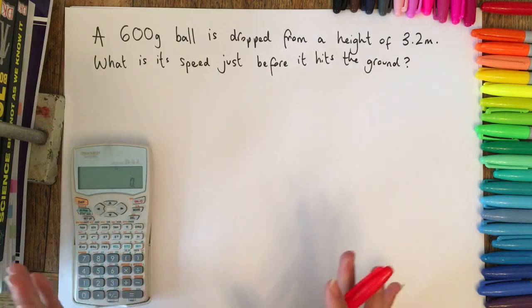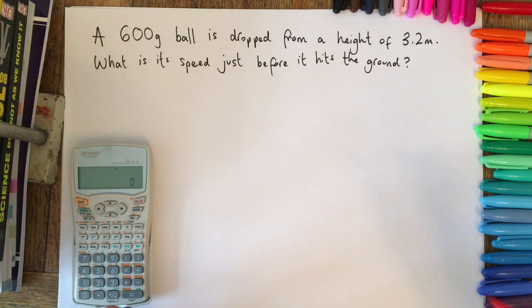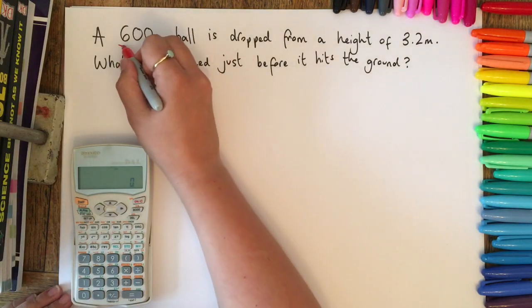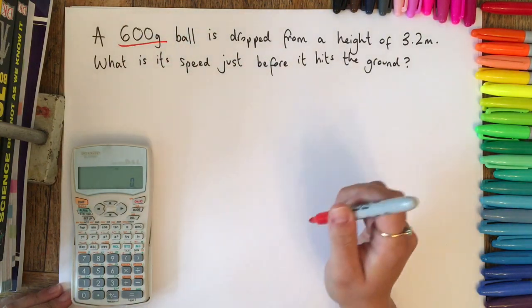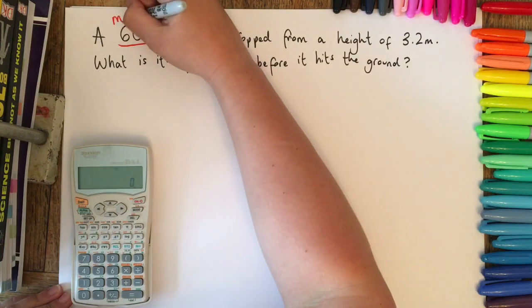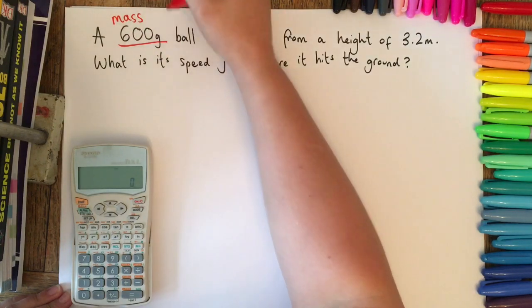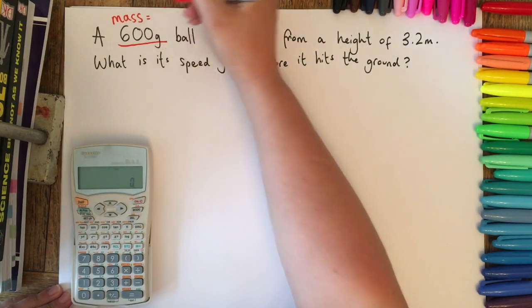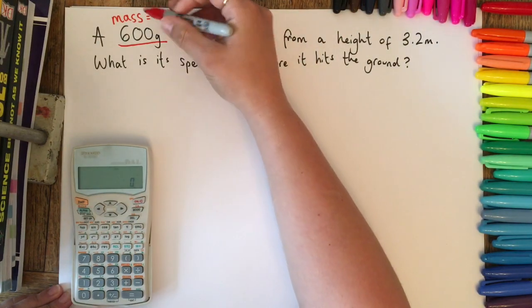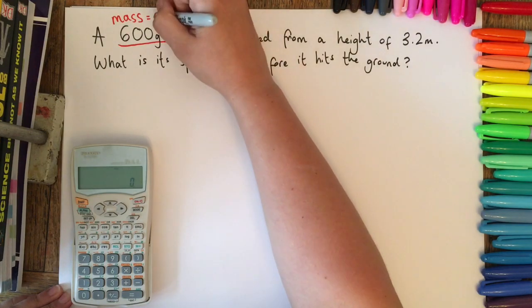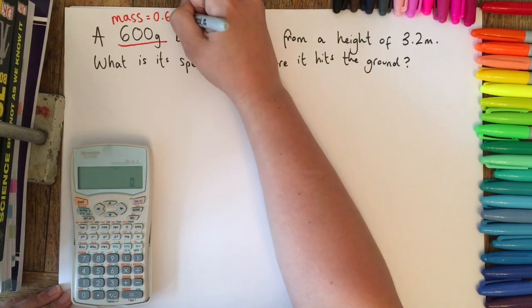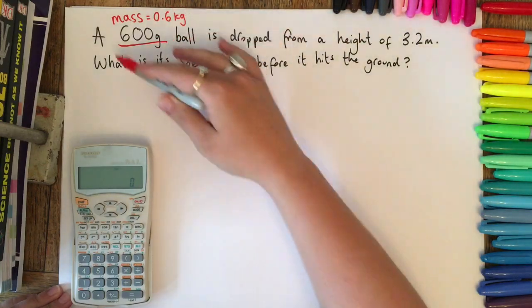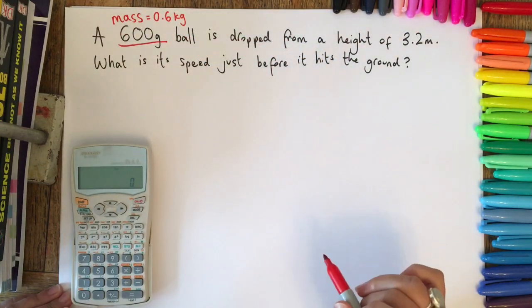The first thing that I would always get you to do is to think about what values are we actually given in the question. We're told that it's a 600 gram ball, so I would write what this means: 600 grams is mass, except that we don't do mass in grams, we do mass in kilograms. So you need to convert this: 600 grams in kilograms is 0.6 kilograms. Even before moving on, I would think to myself we don't use grams, we use kilograms, let's do the conversion so that I don't forget.